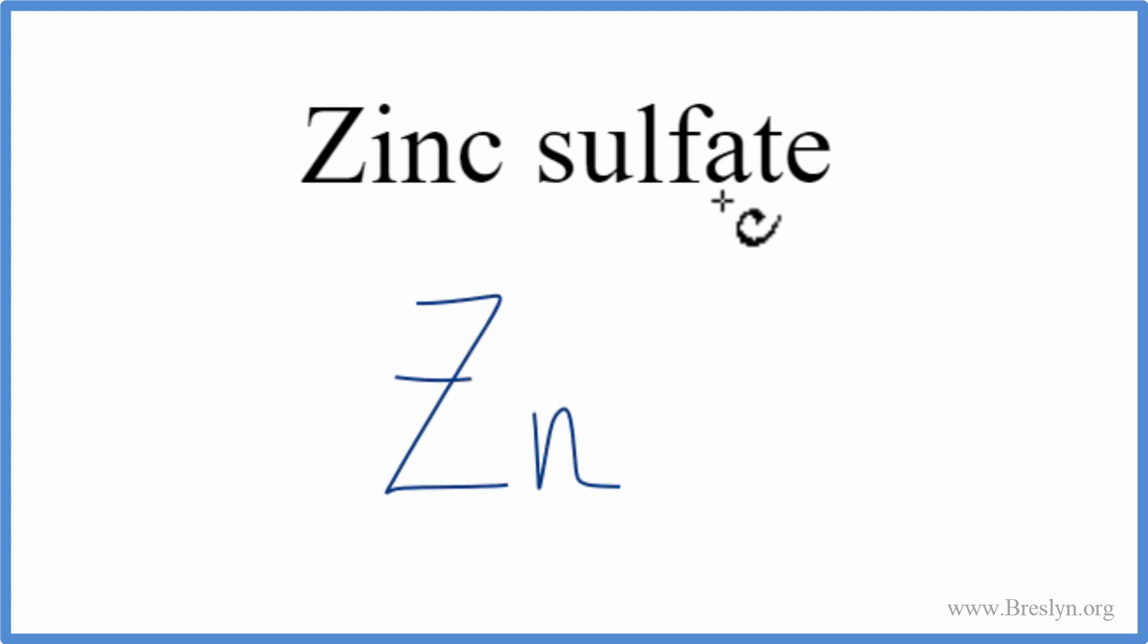The sulfate's not on the periodic table. It ends in ATE, so it's a polyatomic ion. We can look this up on a table of common polyatomic ions, or have it memorized. Sulfate is SO4 2 minus.